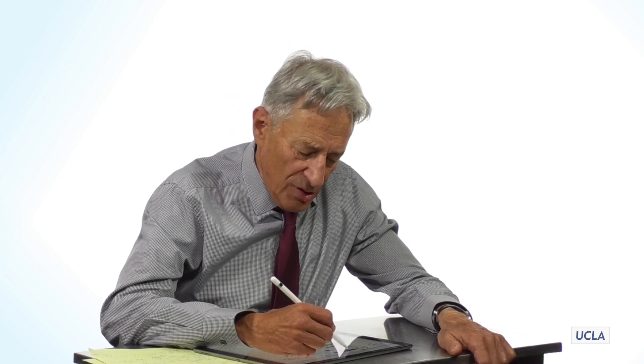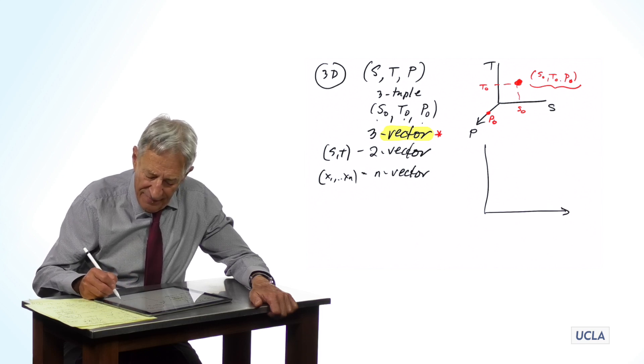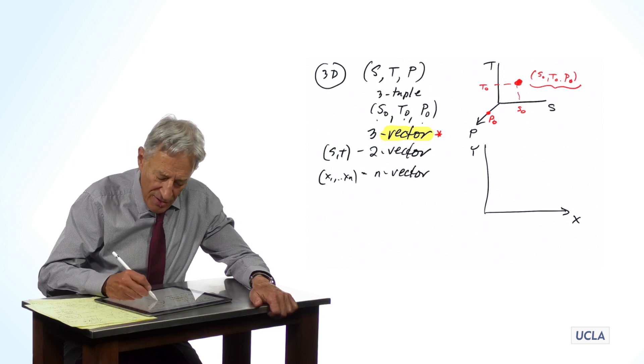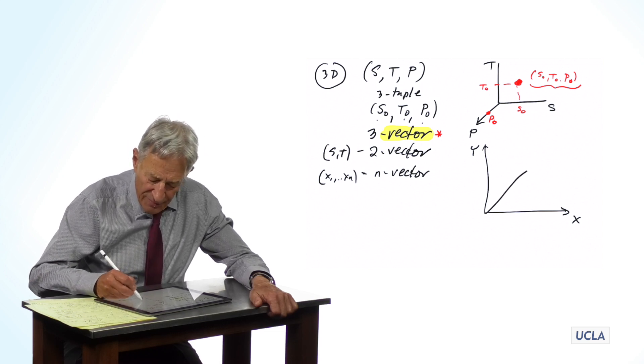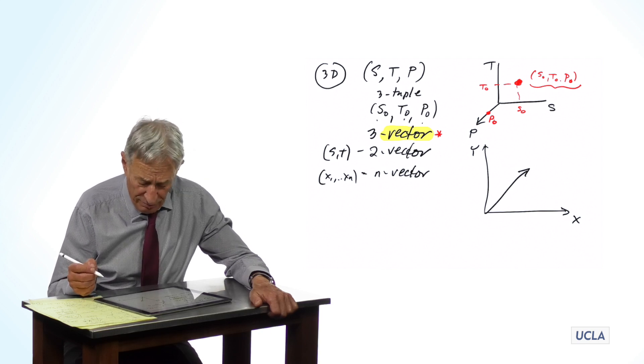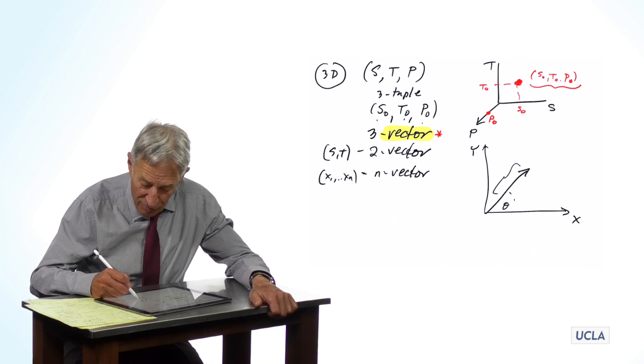Now, I want to say something about vectors because this is a word that you've heard before, and we're using it here in a slightly more advanced fashion. You've certainly heard the statement that a vector, and let's just put it in an abstract xy space, that a vector has magnitude and direction, where this is the magnitude and this is the direction.